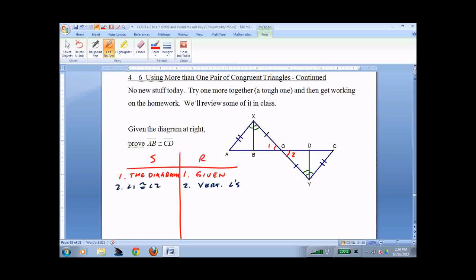And it looks like I've got angle side angle. Let's go for triangle congruence. Triangle XOB is congruent to triangle YOD. So far so good.